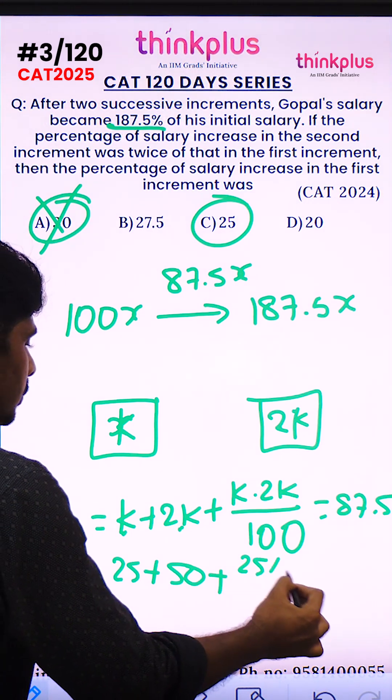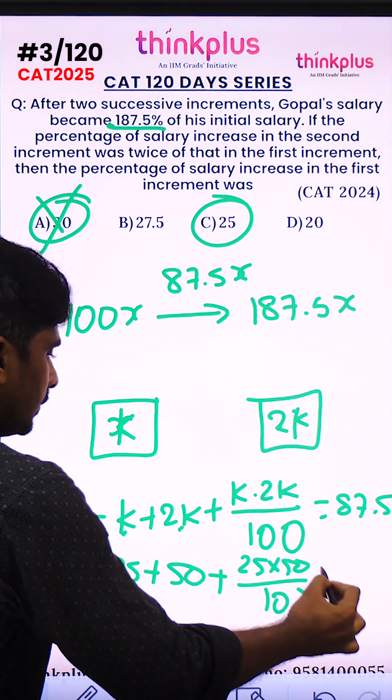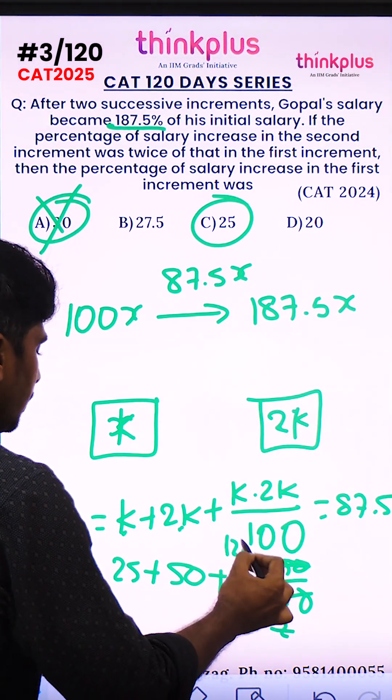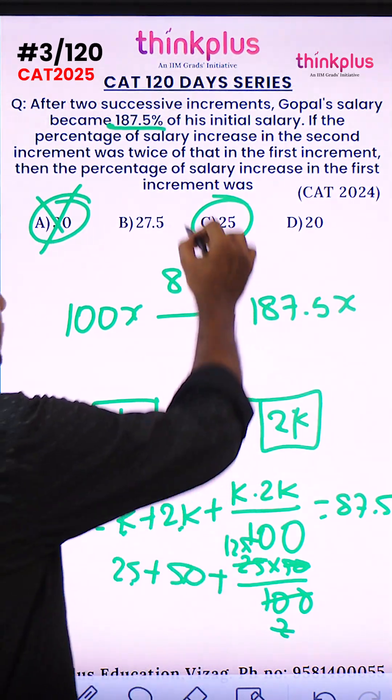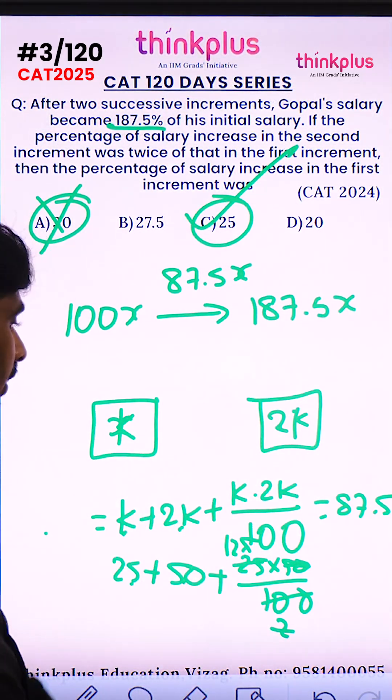That's 25 times 50 divided by 100, which is 12.5. So 75 plus 12.5 equals 87.5. This is satisfied, so the answer is 25. Otherwise, you would have to solve the quadratic equation.